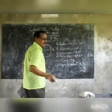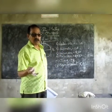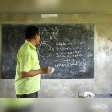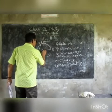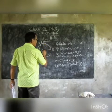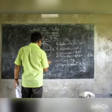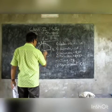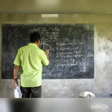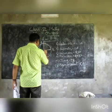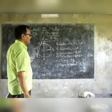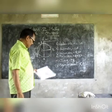Radii is the plural of radius. These are the radii of the circle: OB, OC, and OA. These three are the radii of the circle.